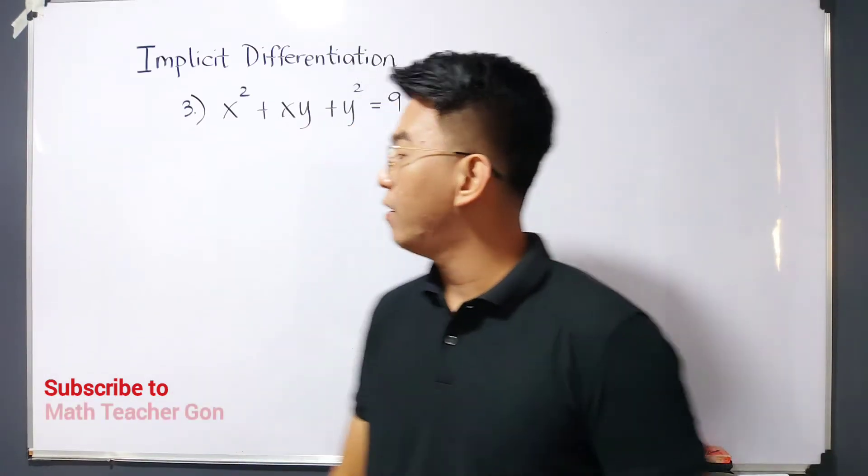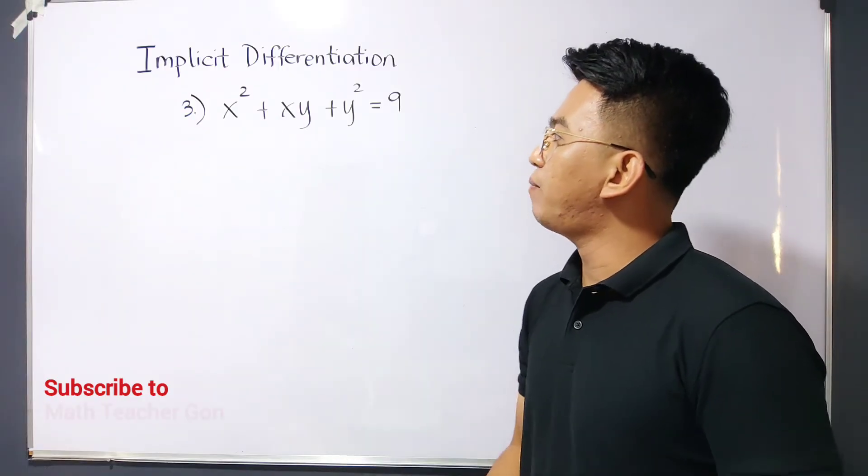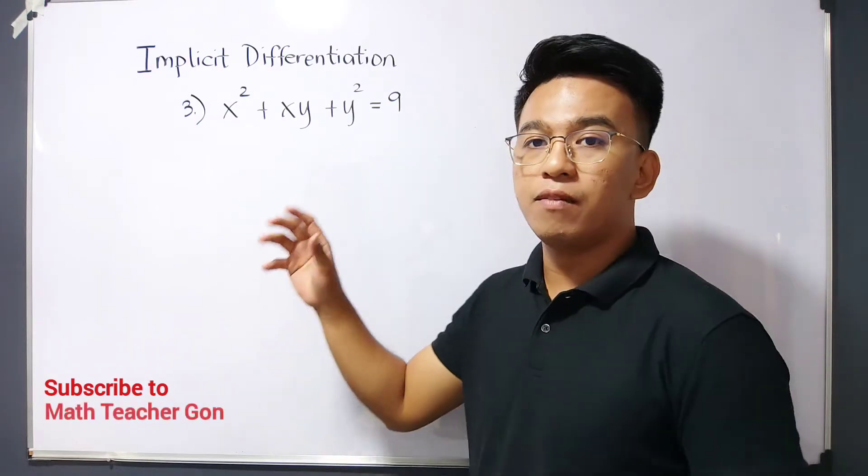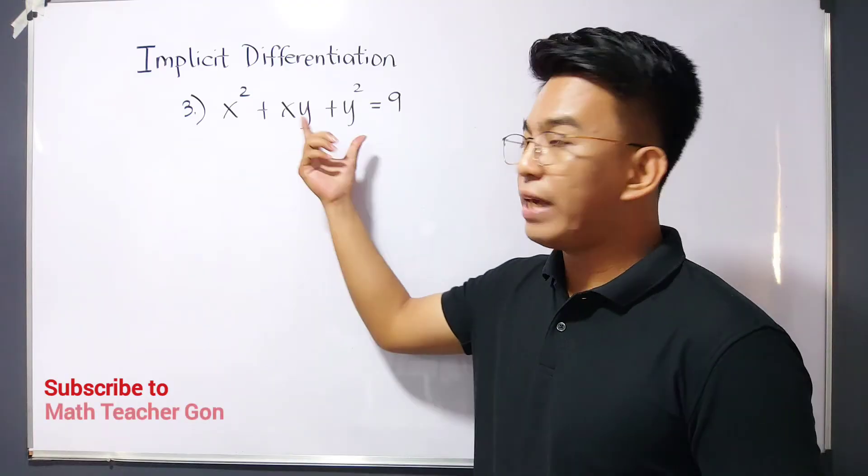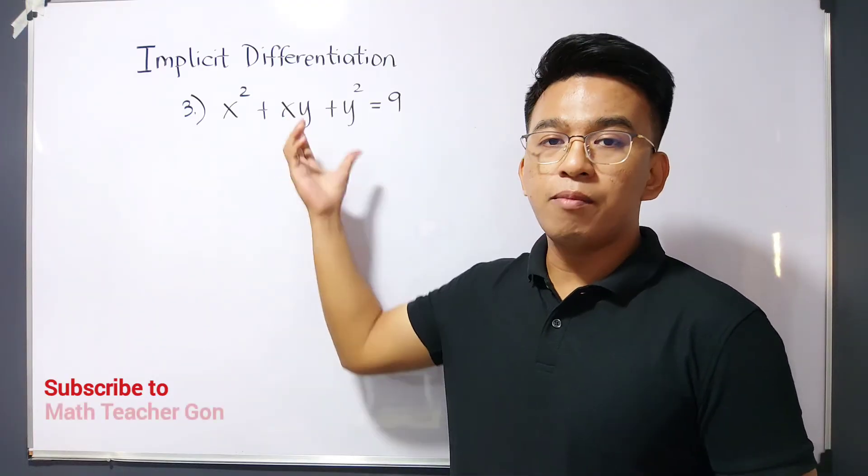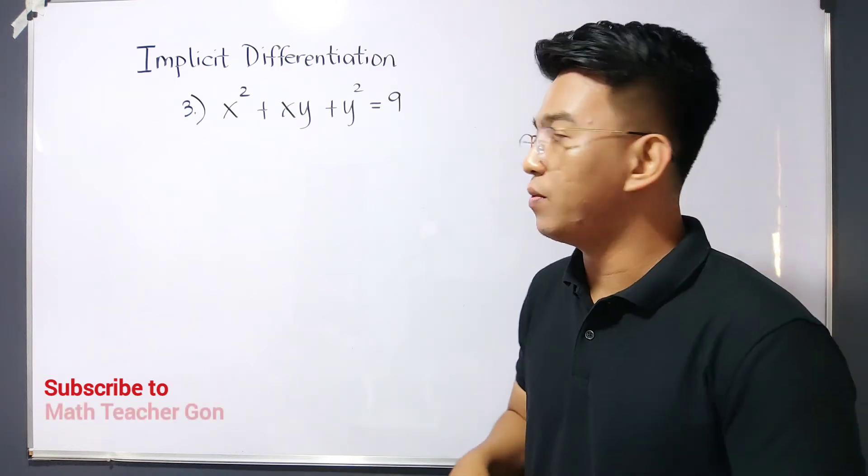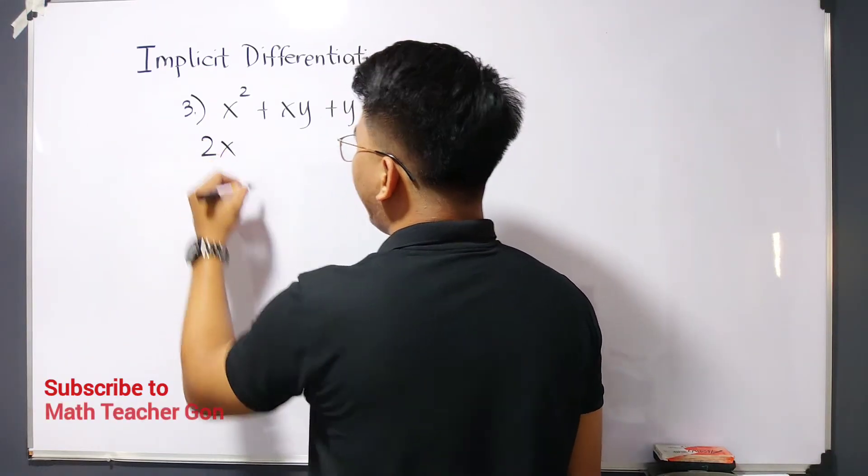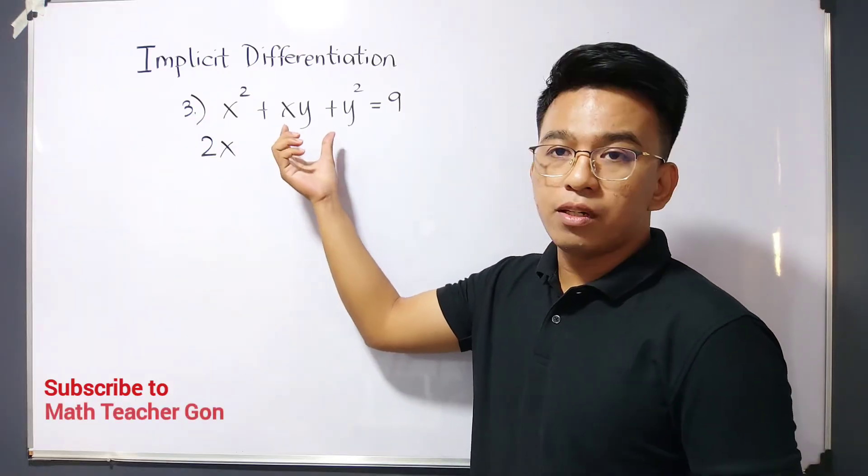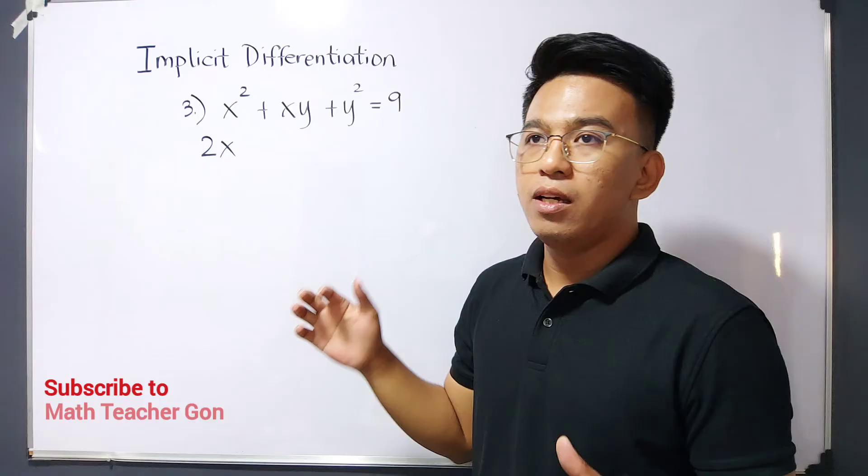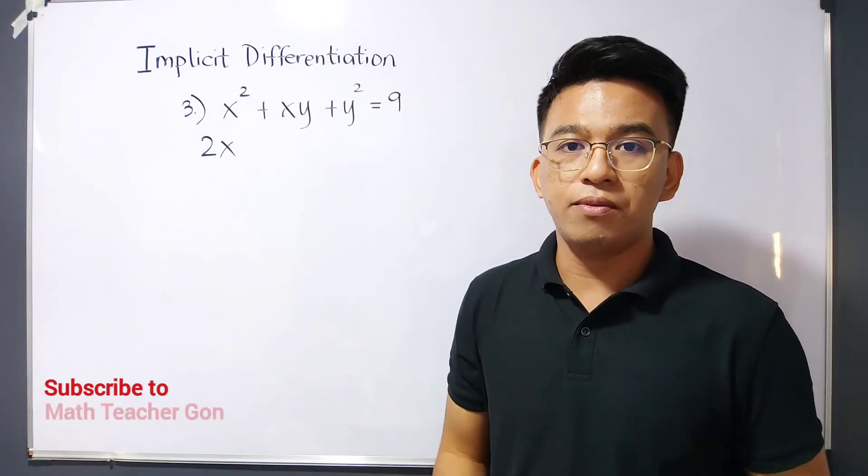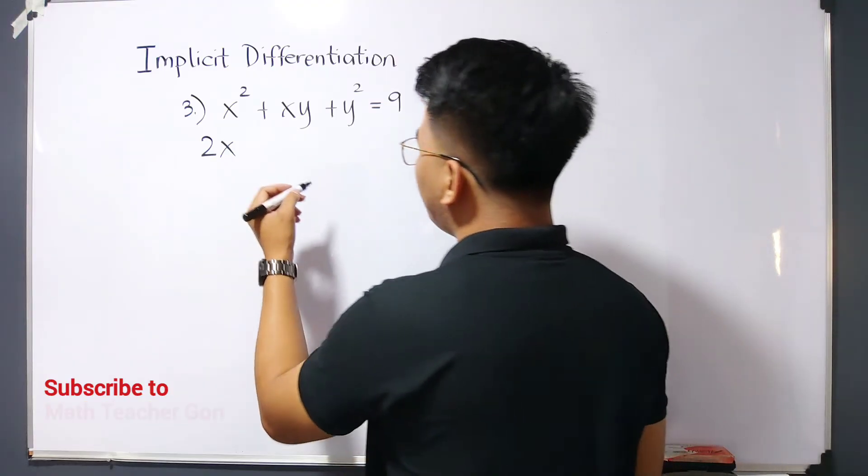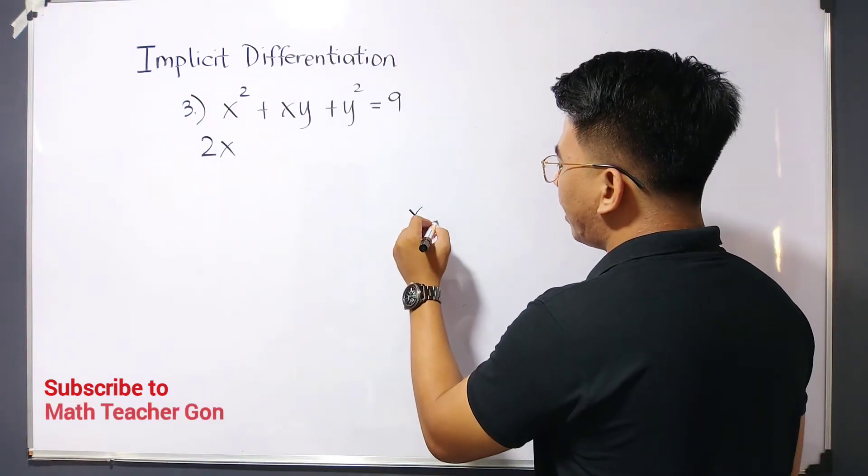Now let us continue for item number 3. We are given here x squared plus xy plus y squared equals 9. The difference of this item from the previous examples is that we have a term which combines the x variable and the y variable. Let's start. The derivative of x squared is 2x, and whenever you encounter this kind of term with both x and y together, think that you need to use the product rule.